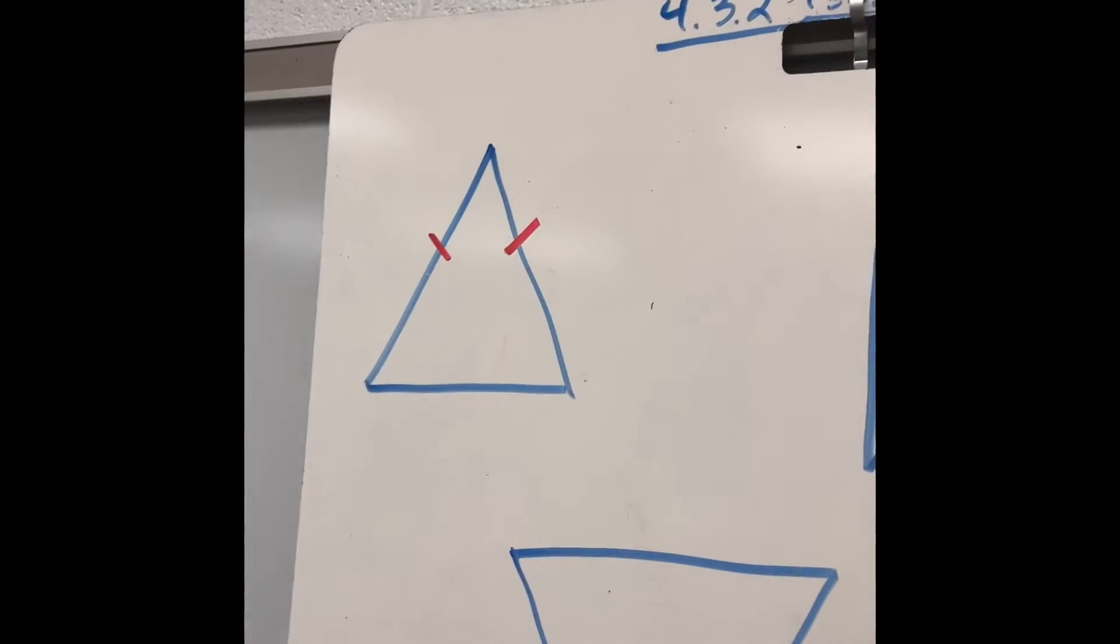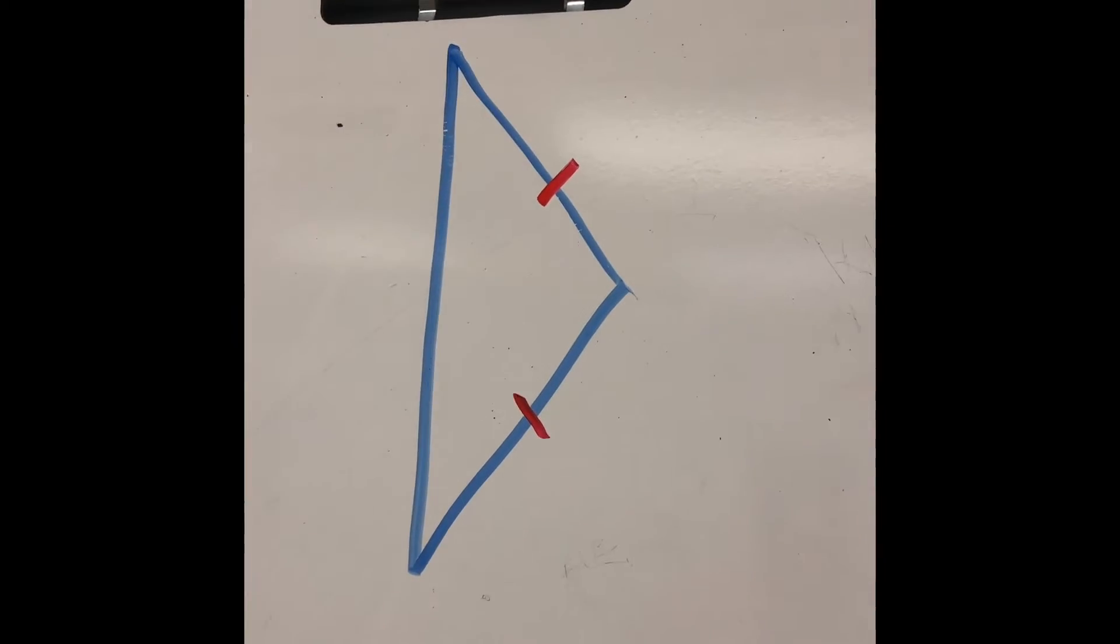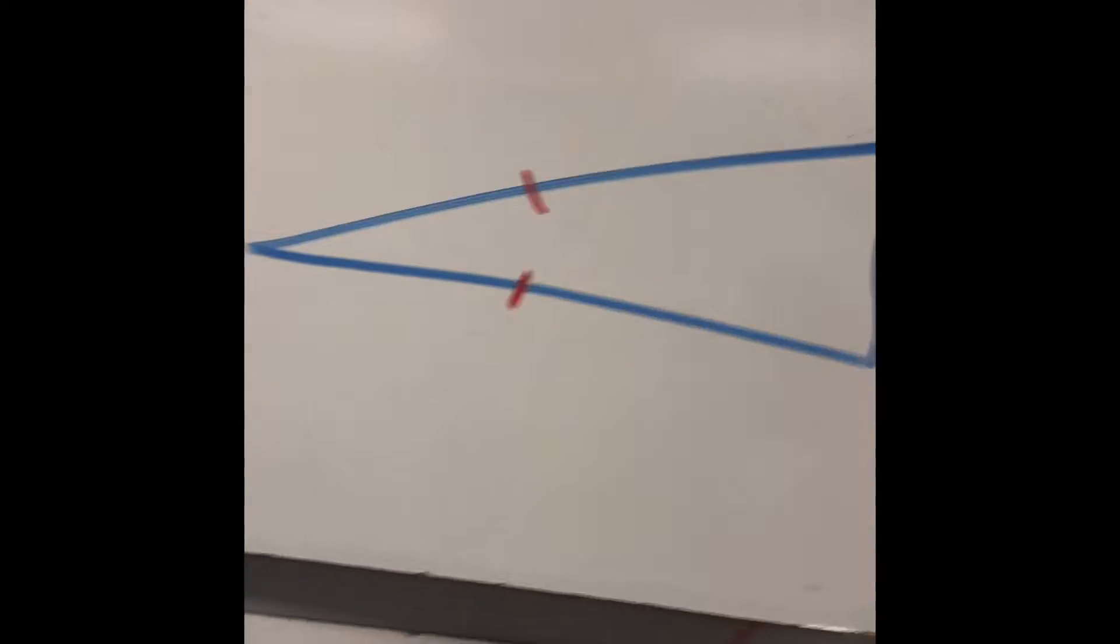In an isosceles triangle, two sides are equal. This is isosceles. Two sides are equal.